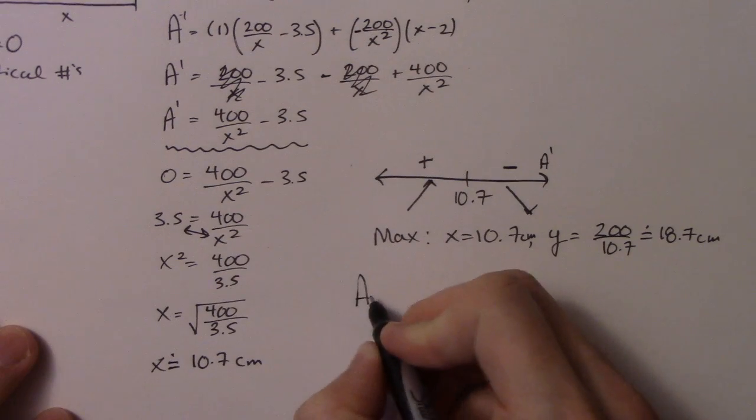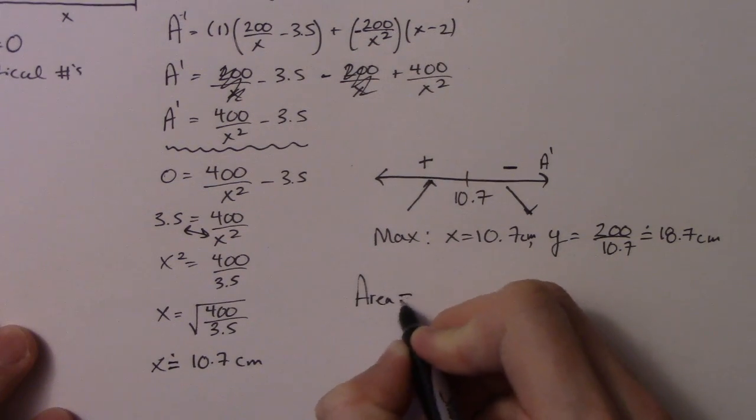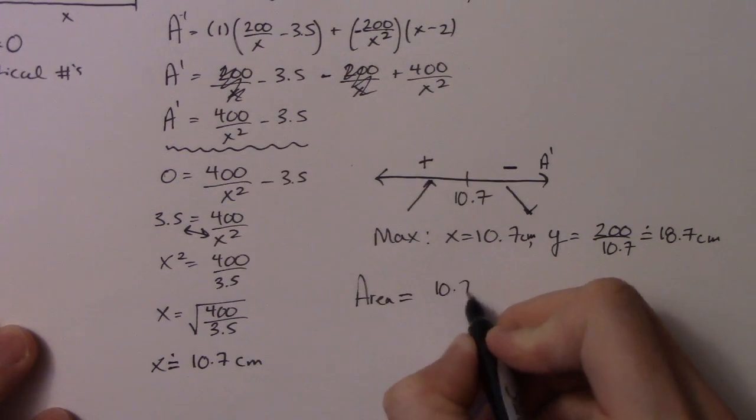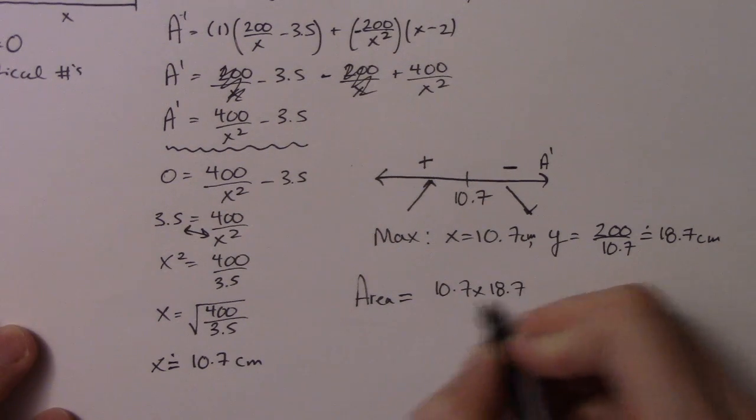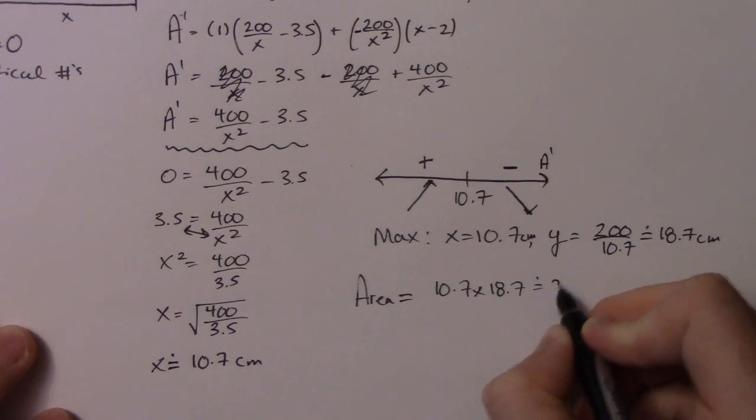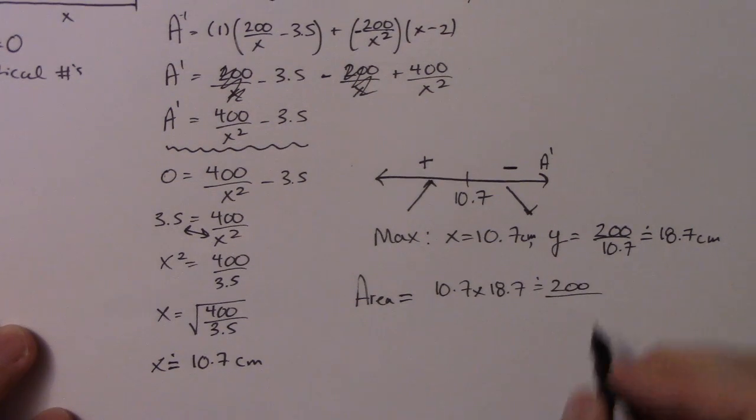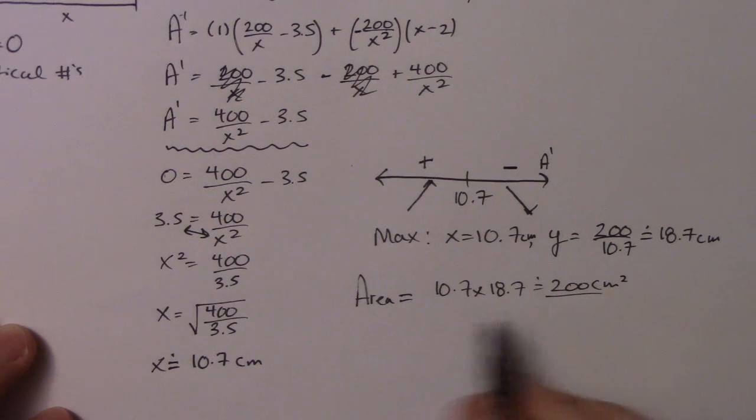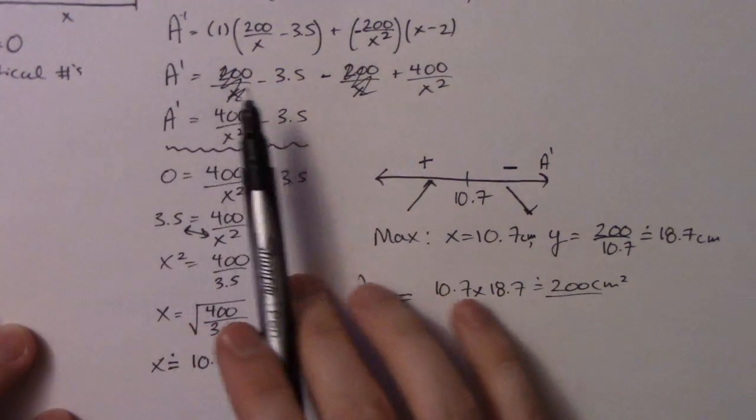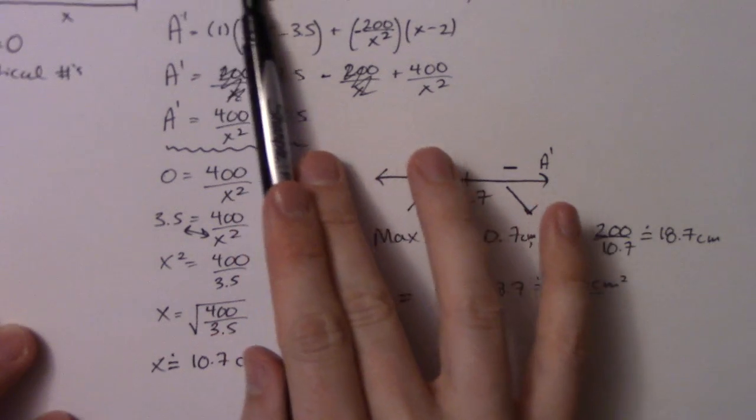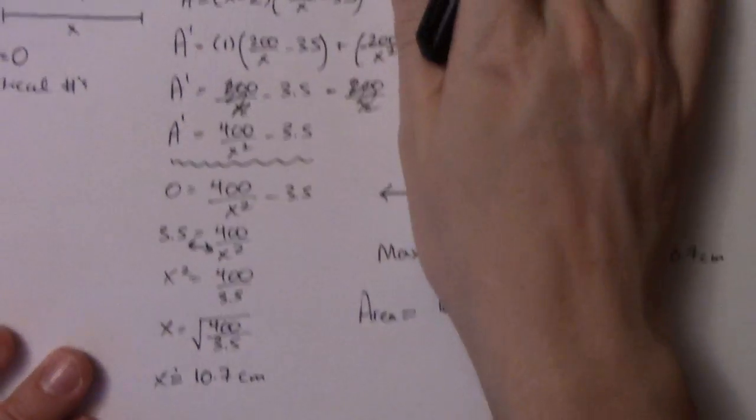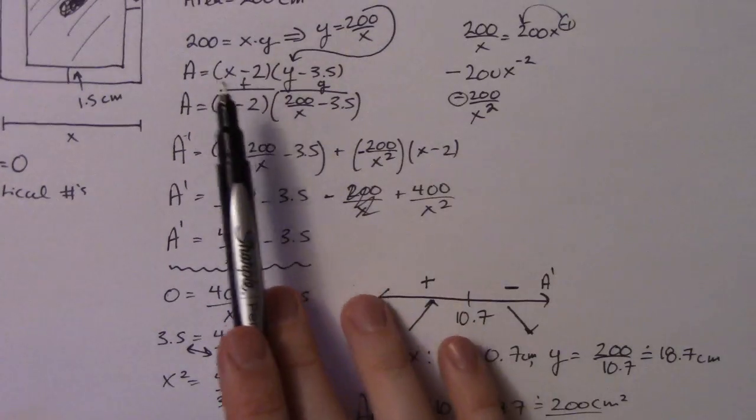So if you actually wanted to find the area, well, we know what it is, it's 200, right? So 10.7 times 18.7, and that should be about 200 centimeters. So it's about there. So if you want to actually find the question asked for the dimensions of the inside part, you can go ahead and put it back into this original formula x and y and actually figure it out.